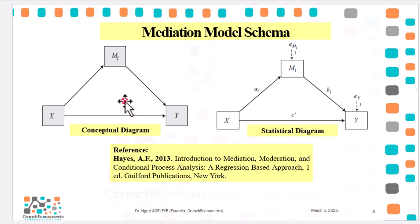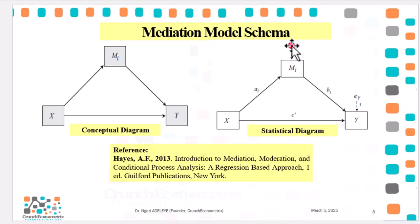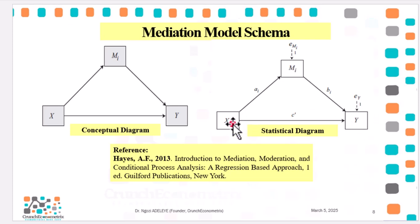For the statistical diagram, upon analyzing this model, alpha I (or AI) will be the coefficient of X when you regress M on X, and EM will be the residual from that model. When you regress Y on M, beta I is that coefficient, and EY will be the residual from the regression of Y on M and X. When you regress Y on X, C prime will be the coefficient. The statistical diagram tells you how you are going to obtain your coefficients.